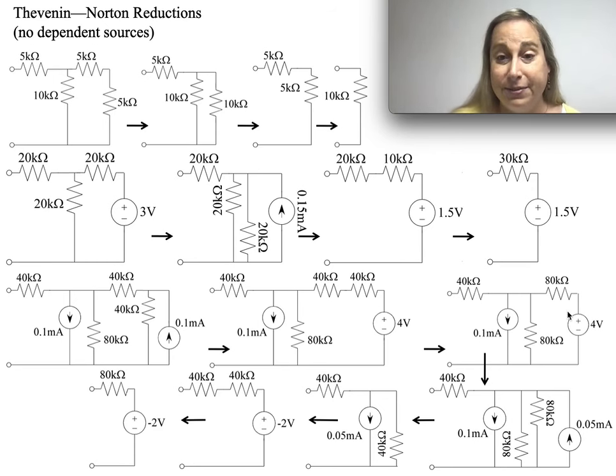Once I've done that, I realized I need to do another Thevenin-Norton equivalent here, which gives me the two 80k in parallel, so I get this 40k. I get 0.15 and I get 0.1 going down in this direction. Current sources in parallel will add up with the sign of the currents.